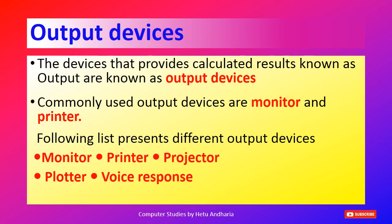Now we are going to discuss output devices. Devices that display the output of processed data are known as output devices. Commonly used output devices are monitor and printer, and speaker should also be added. The following output devices are covered: monitor, printer, projector, plotter, and voice response. The textbook has also forgotten to include speaker, which I will teach as well.